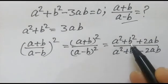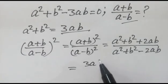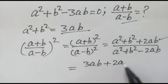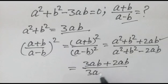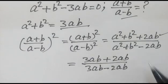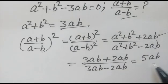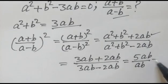Now, substituting a squared plus b squared equal to 3ab, we get 3ab plus 2ab over 3ab minus 2ab, which is equal to 5ab over ab, which is equal to 5.